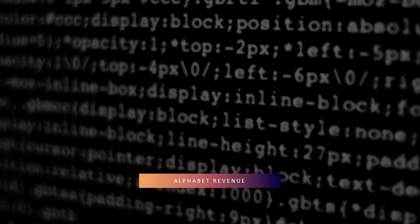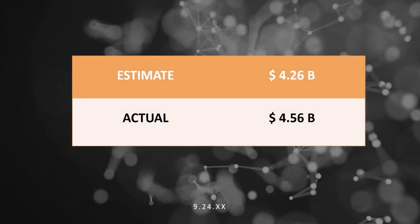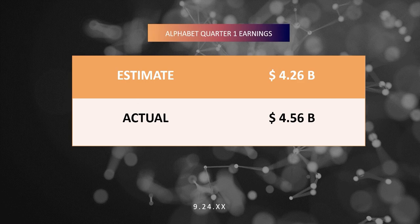On February 1, 2016, Alphabet Incorporated surpassed Apple to become the world's most valuable publicly traded company — until February 3, 2016, when Apple surged back over Alphabet to retake the position. Experts cited Apple's lack of innovation as well as increasing Chinese competition as reasons.